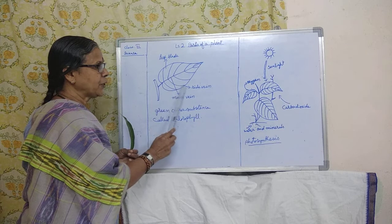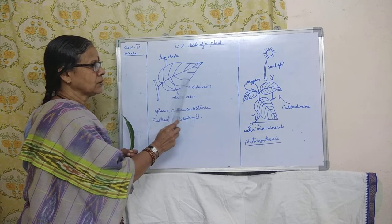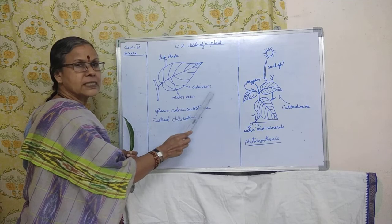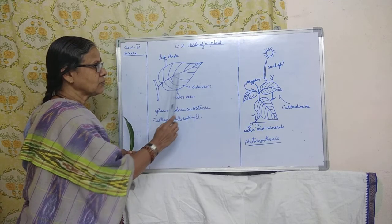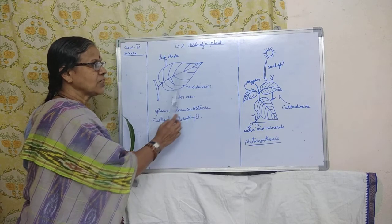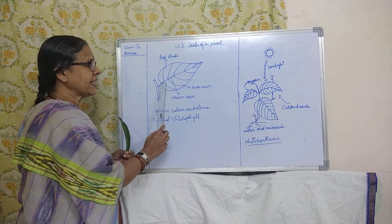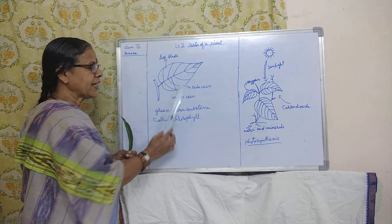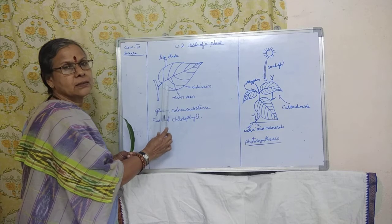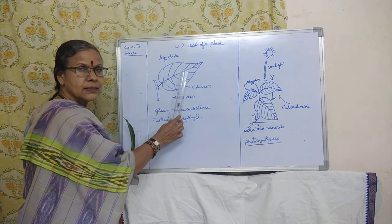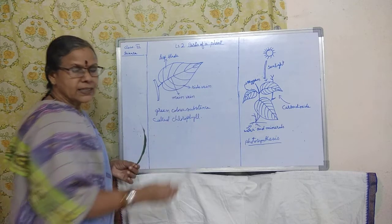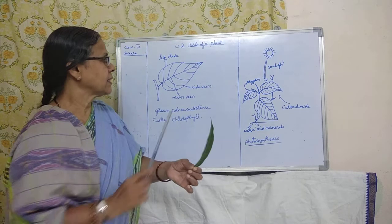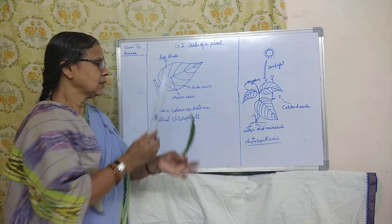The side lines — the side tubes attached to the main vein — are called the side veins. These veins work like a tube; they carry water and minerals to the inside of the leaf. That is why the leaves are wet.